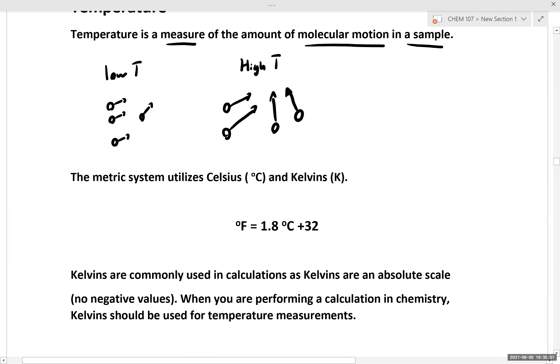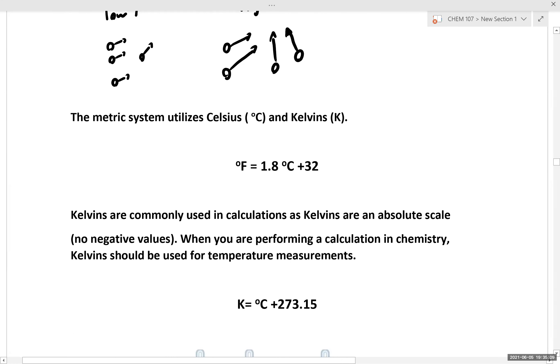Now the metric system commonly utilizes units of Celsius and Kelvins to describe temperature. Kelvins are commonly used in calculations as Kelvins fall on an absolute scale, which means there are no negative values for temperature in Kelvins. Generally when you're performing a calculation in chemistry, Kelvins are the go-to units for temperature measurements.